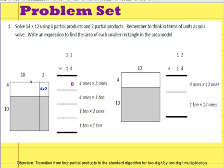Now I'm going to do this section of the rectangle: 4 times 10. 4 times 10 is 40, so 4 ones times 1 ten is 40.